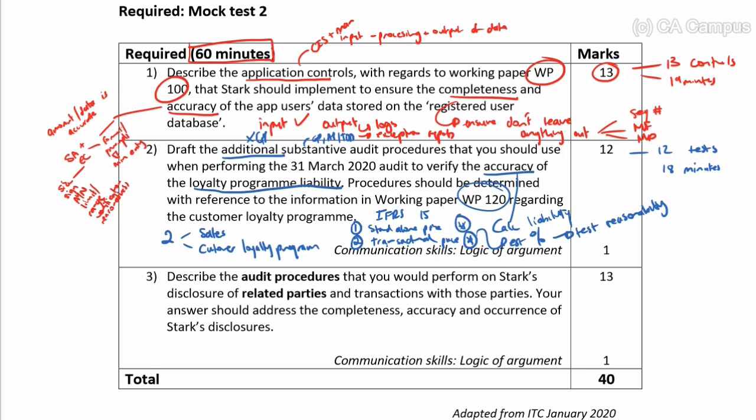Finally, question three: describe the audit procedures. So audit procedures—you haven't been limited. So if there are controls, I can use test of controls. If not, general procedures, analytical procedures, and test of detail that you would perform on Stock's disclosure of related parties and transactions with those related parties. Your answer should address the completeness, accuracy, and occurrence of Stock's disclosures. So have they disclosed number one, the related parties, and number two, the related party transactions? Okay, so I'm looking at multiple requirements for disclosure, but this all sits in your IAS 24—so your related party standard. And from an accounting perspective, I know I've got an auditing standard that's going to help me: ISA 550 is going to help me with the audit procedures. So that's going to be nice. And again, it's completeness, accuracy, and occurrence.